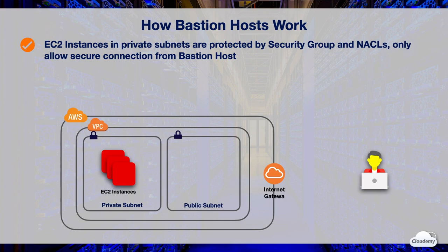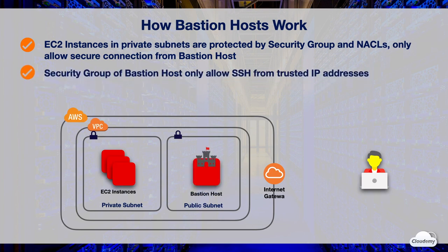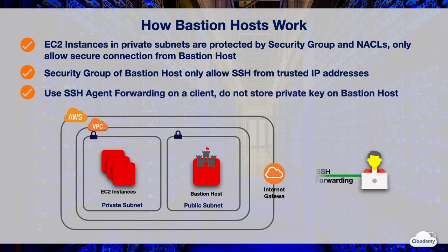The security group associated with EC2 instances in the private subnet only allows secure connections from the bastion host using SSH. In the public subnet, we have launched a bastion host — this is a specially hardened EC2 instance. The bastion host is routable from the internet; however, we can use security groups to allow connections only from trusted IP addresses over the internet using SSH.